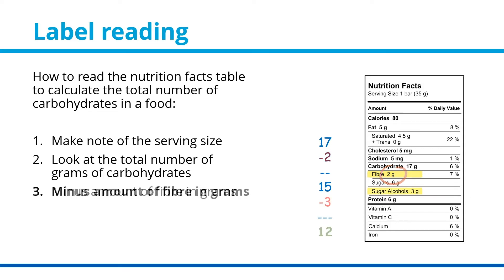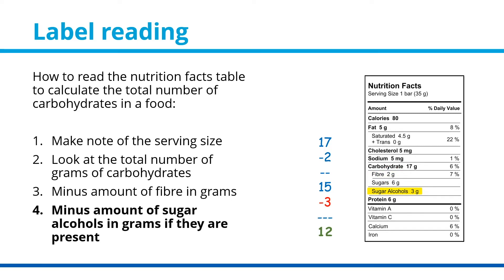Finally, if they are present, you also need to subtract the number of grams of sugar alcohols. This will give you the available carbohydrate amount in grams that will affect your blood glucose level. In our example, we have 3 grams of sugar alcohols. So the final calculation is 17 grams of carbohydrates, minus 2 grams of fiber, minus 3 grams of sugar alcohols, giving you 12 grams of available carbohydrate that will affect your blood glucose level.